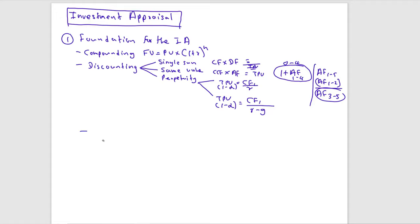When appraising an investment, we use cash flows over profits. Profits can be manipulated and are subjective, whereas cash flows cannot be manipulated — cash must be present either in the bank or physically, so you can cross-check. Also, dividends can only be paid by cash, which is why we prefer cash flows over profits.